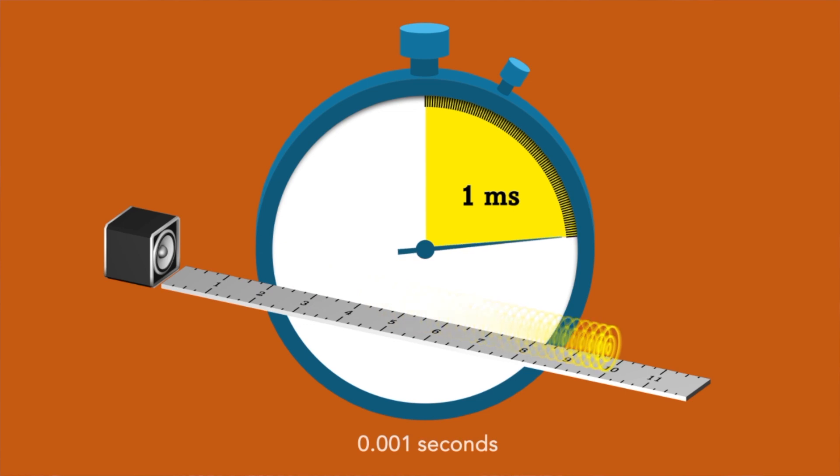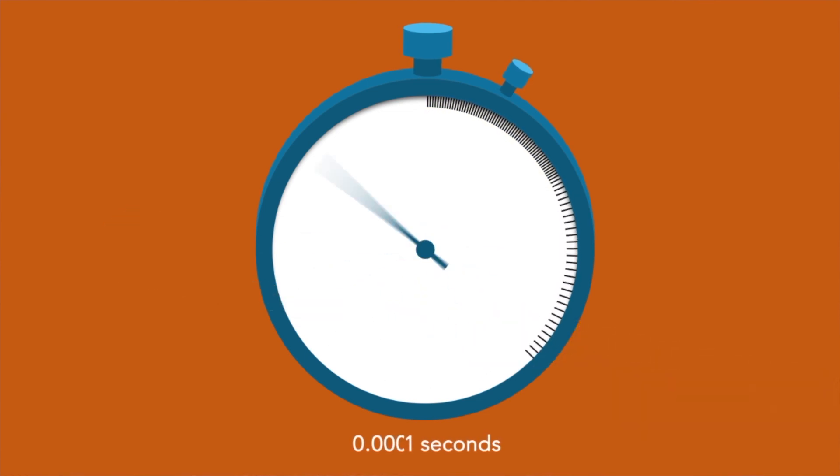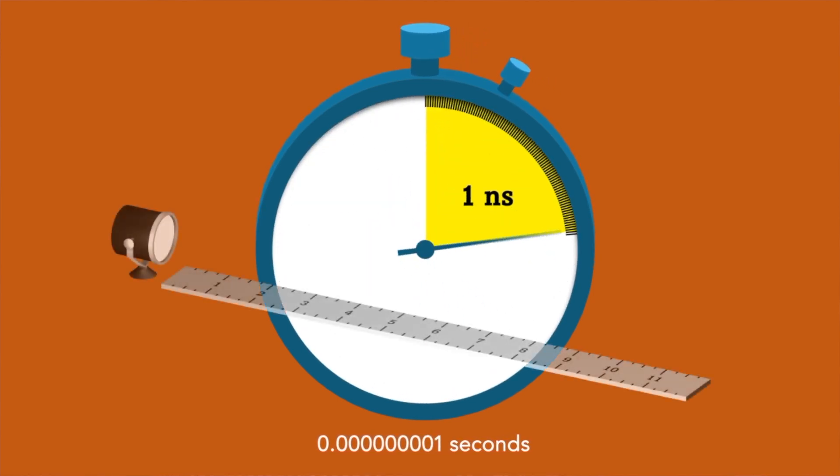So sound travels a foot in one millisecond. If I go another factor of a thousand, I'm at a microsecond. Another factor of a thousand is at a nanosecond. That's how long it takes light to travel a foot.